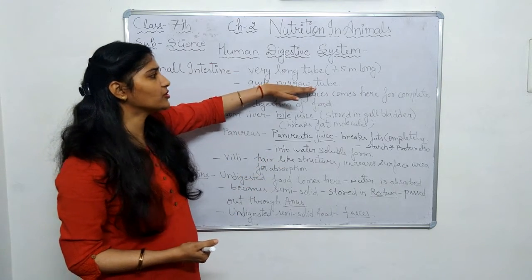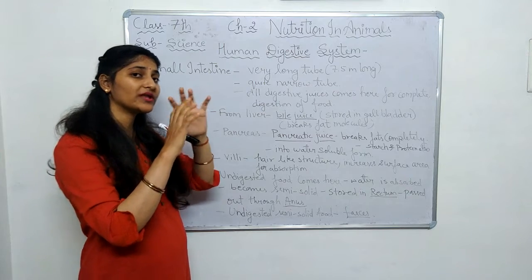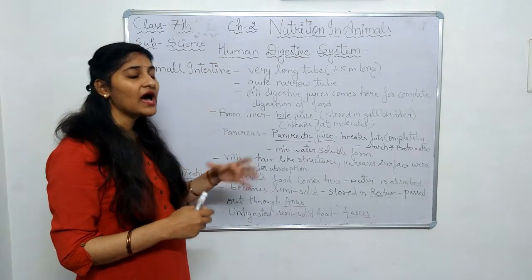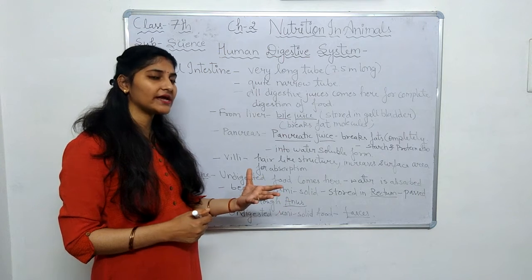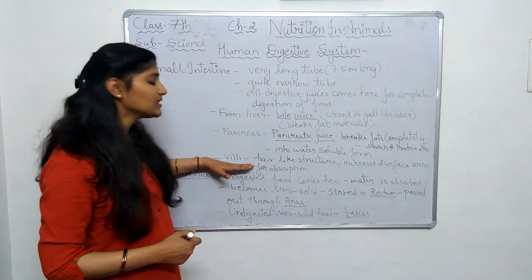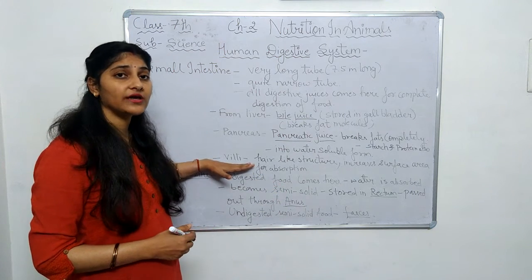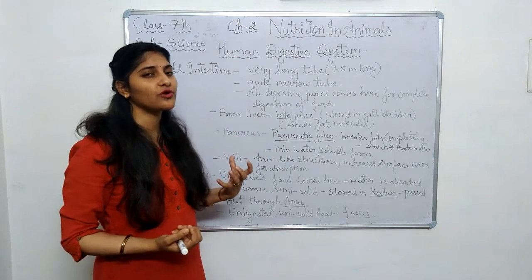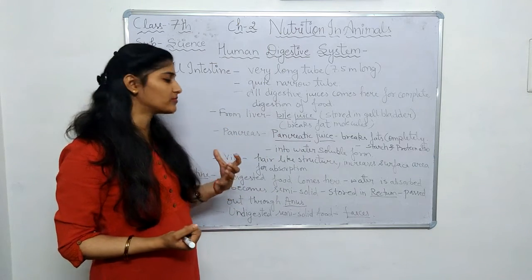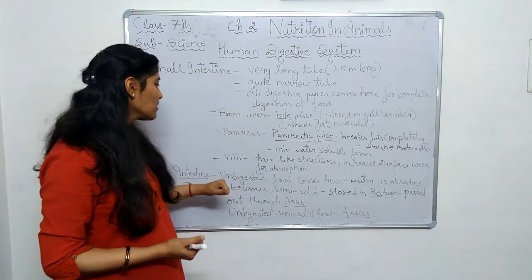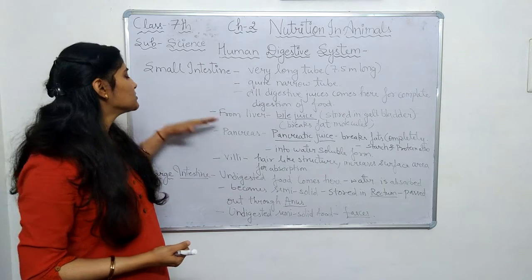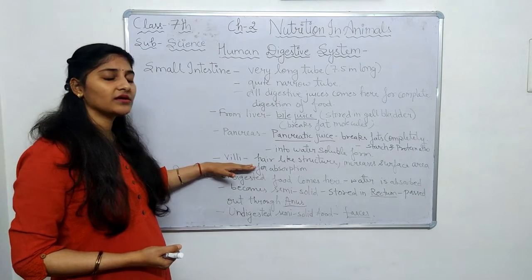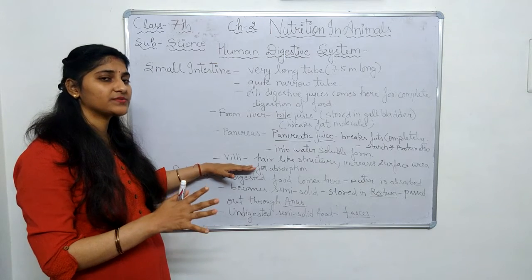Since the small intestine is a narrow tube, to increase the surface area for absorption, the inner lining has villi — hair-like structures — that help in more absorption of nutrients from the food.